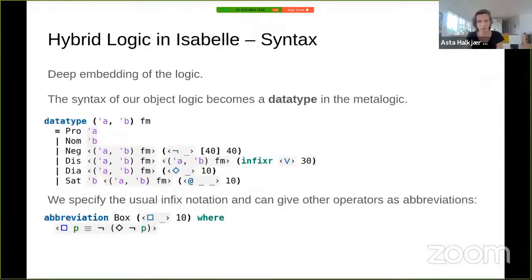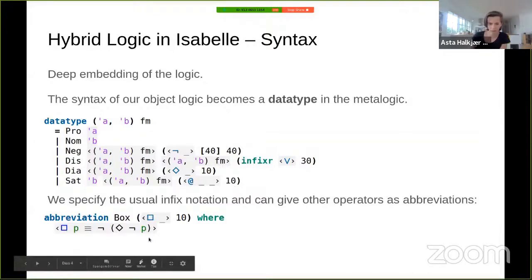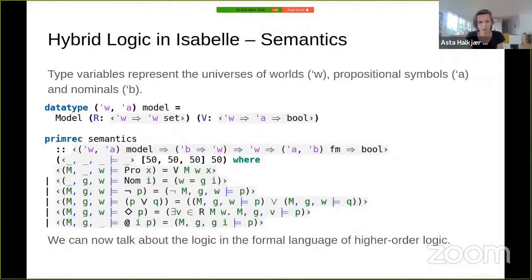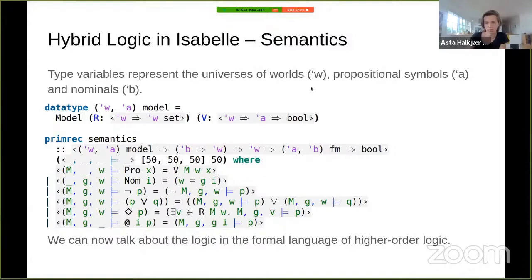To model this in Isabelle, a deep embedding is used: the syntax of hybrid logic becomes a data type in the meta-logic, with a constructor for each syntactic case, standard infix notation, and abbreviations such as the box modality. Semantics become a function over this data type, using type variables to represent worlds, propositional symbols, and nominals, with the accessibility relation and valuation also represented as functions.